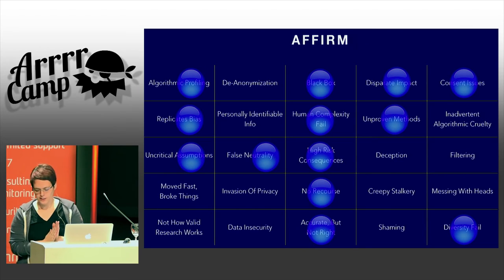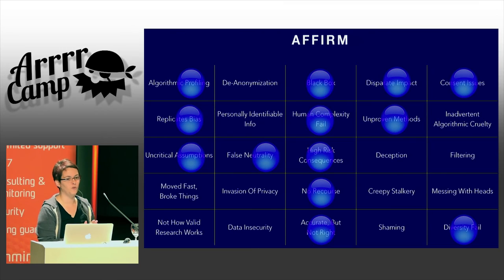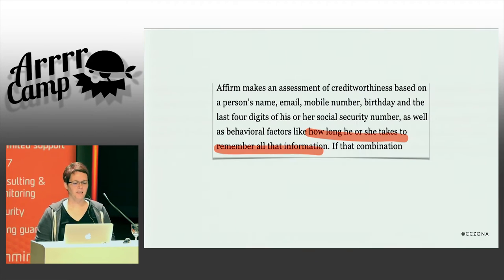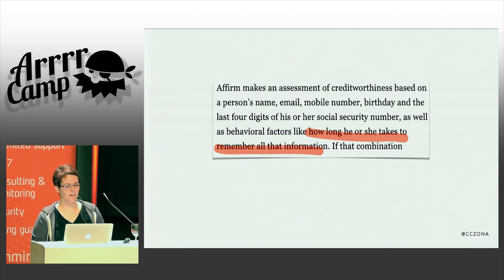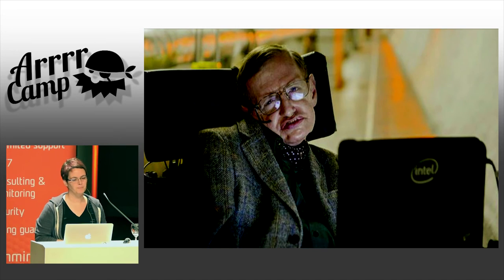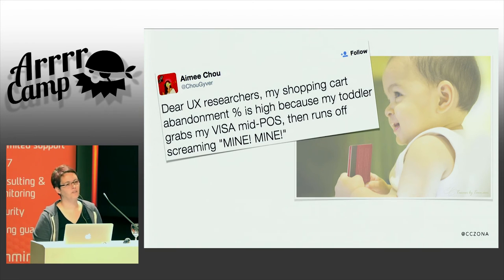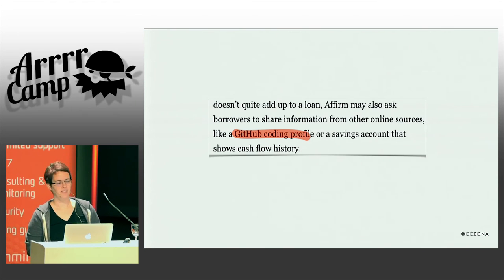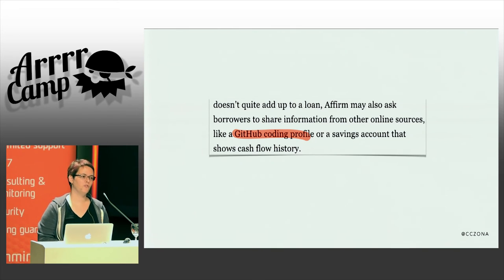Affirm is essentially a credit lending agency that specializes in a few consumer goods. Its target market is mostly young, fairly well-off people. They make an assessment of credit worthiness based on just a few factors originally — name, email, mobile phone number, birthday, and the last few digits of your federal identification number. From there it really goes to work. It does things like look at how long it takes you to remember that information, so Stephen Hawking really sucks as a credit risk. Parents, anyone who is routinely distracted, is going to be treated as less than. They look at things like GitHub activity. Why is that a problem? Well, 2% of open-source contributors are women. If you start getting into people of color, especially women of color, the numbers become fractional. This algorithm is just reinforcing privilege.